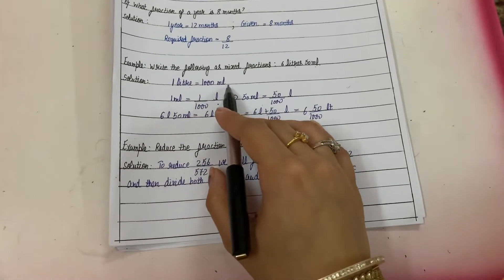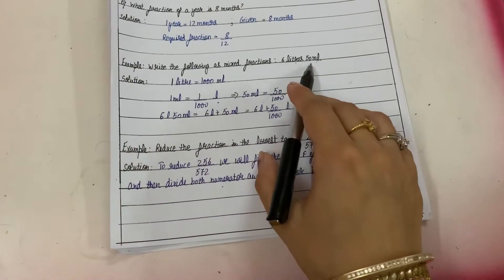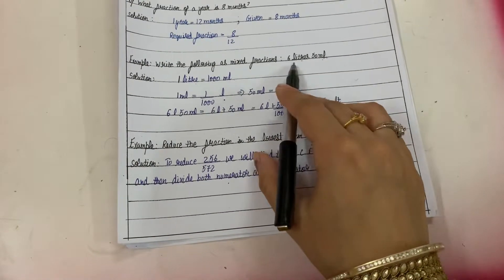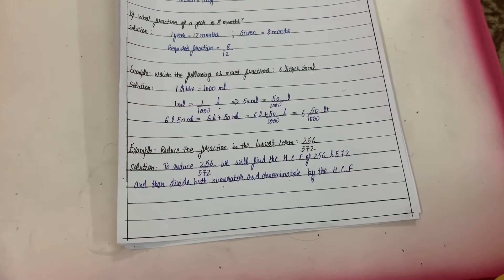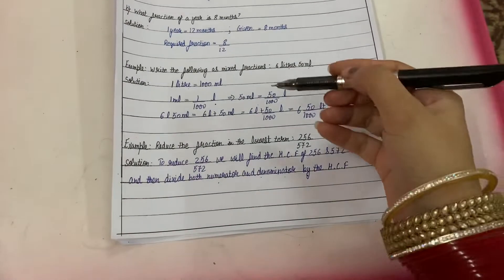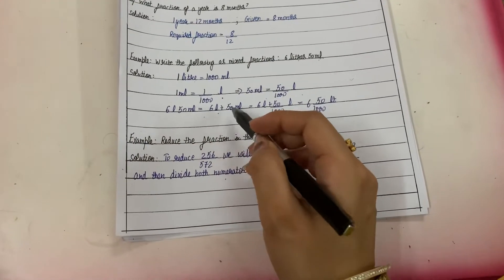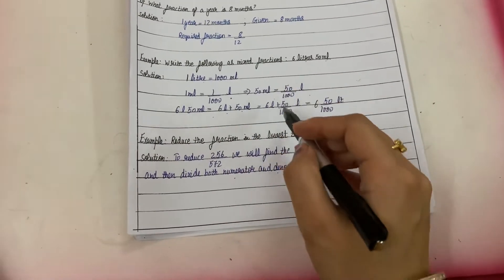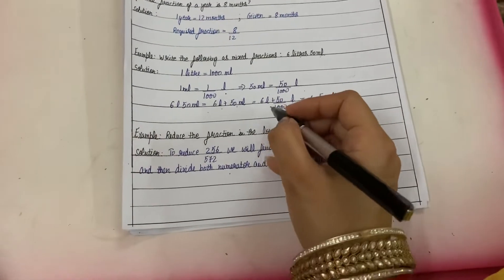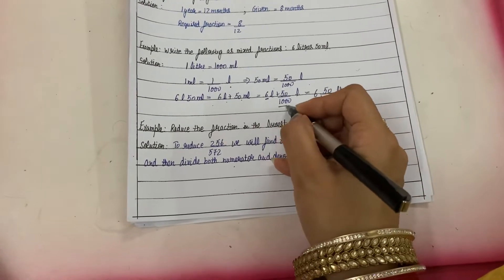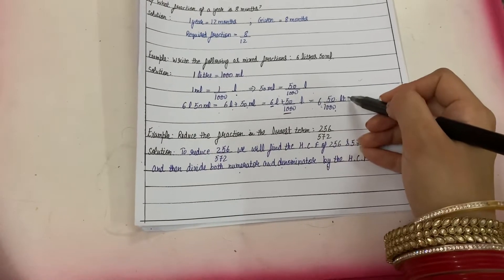One liter is equal to thousand milliliters. We will always convert to the higher unit. So one milliliter is equal to one upon thousand liters. Therefore, 50 milliliters becomes 50 upon 1000 liters. So six liters 50 milliliters is written as six plus 50 upon 1000 liters, giving us 6 and 50/1000 as your mixed fraction in liters.